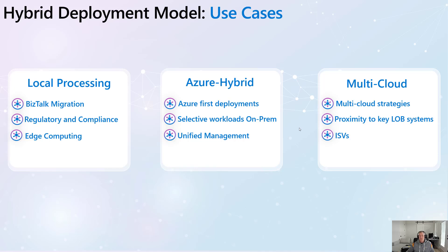The big benefit here is unified management — you don't have to go to two different tools. You go to the same tool and find both deployments in place. The third bucket is multi-cloud, which has seen a fair bit of interest. Larger organizations with multi-cloud strategy needs may want to deploy some workloads in Azure and some in competing public clouds, driven by proximity to line of business systems or subsidiaries with different needs in different regions. By using the hybrid deployment model, they could standardize on Logic Apps and choose to host them in different manners.